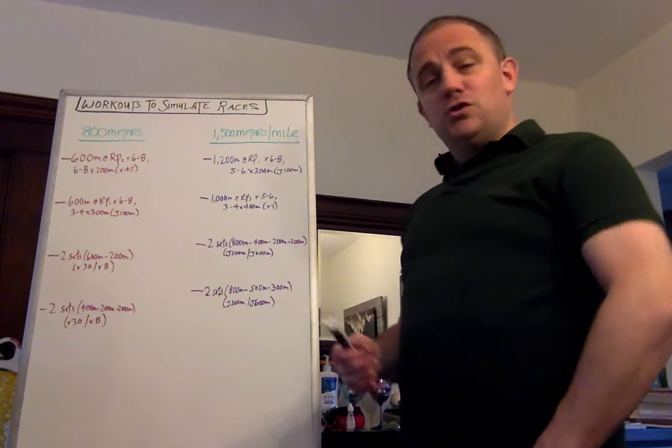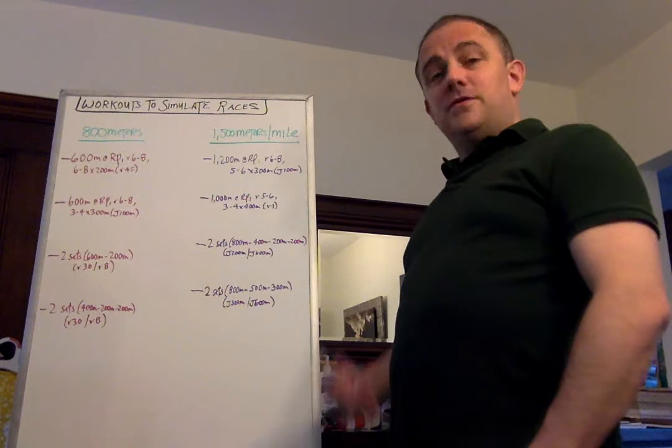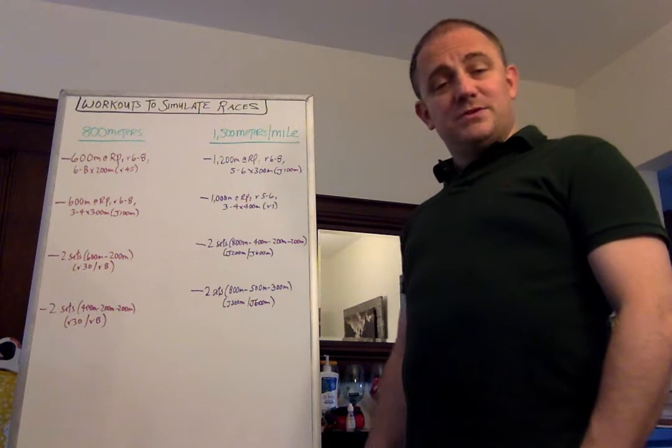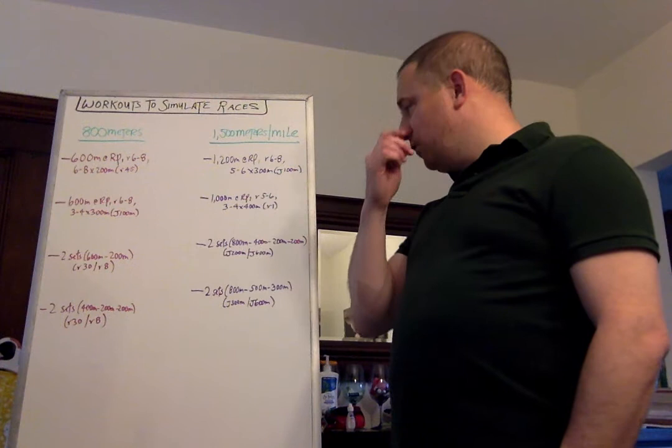The second one, a thousand meter effort. And again, you could do your 1200s for your older, more experienced athletes or your 1,000 meter effort for your younger athletes that are building up, or you could progress from the 1,000 to the 1,200. It's completely up to you. But a 1,000 meter effort at goal race pace. So again, if it's a five-minute mile, you're looking at about 3:06. And if it is a 4:20 mile, you're looking at about 2:41-ish, something like that. So, 2:41-2:42, five- to six-minute active recovery.